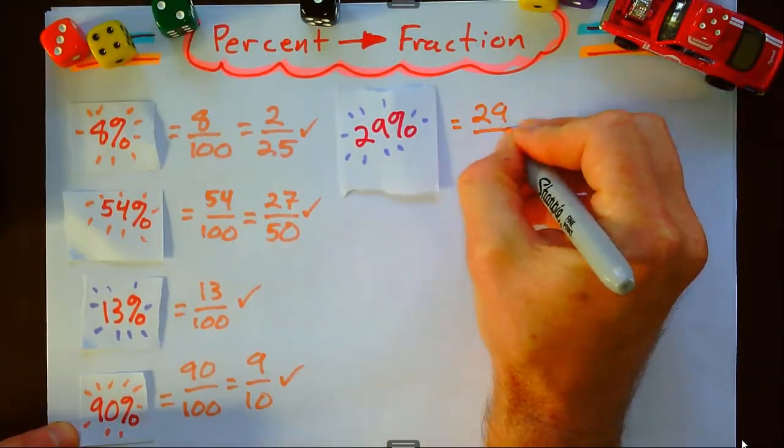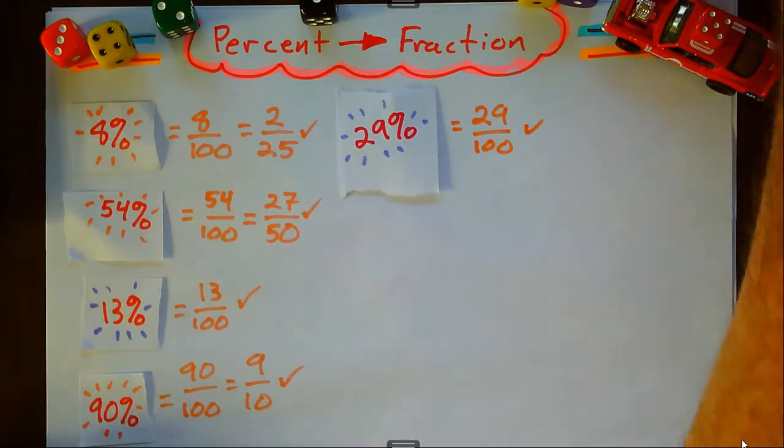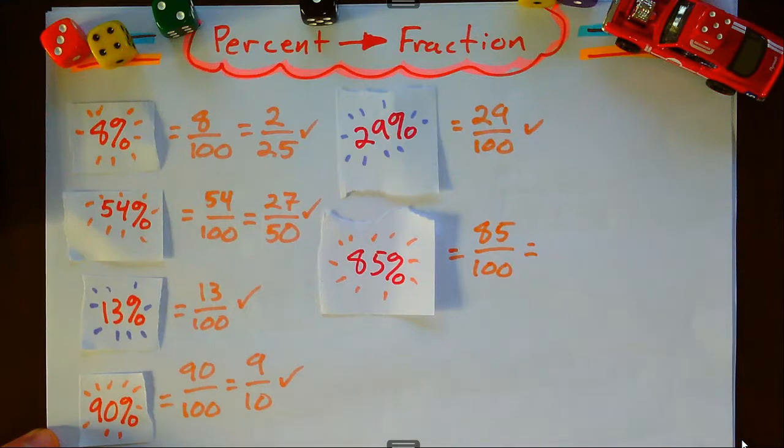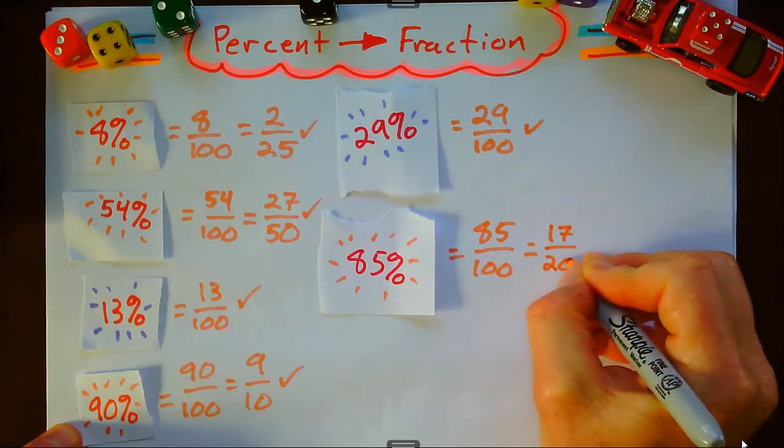29% - percent means out of 100, so that's 29 out of 100, and that does not simplify. 85% is 85 out of 100. Of course, simplify by a common factor of 5.